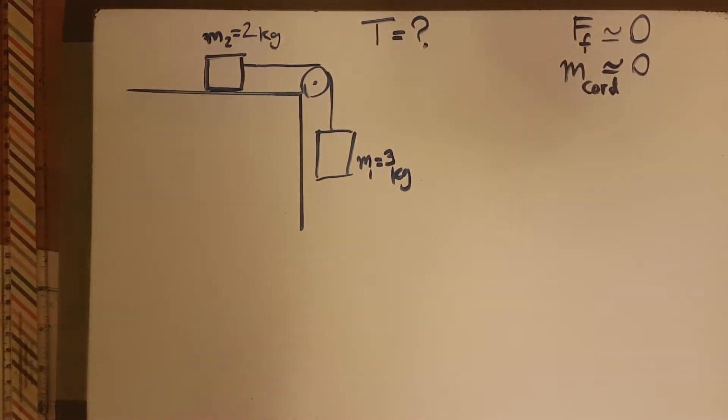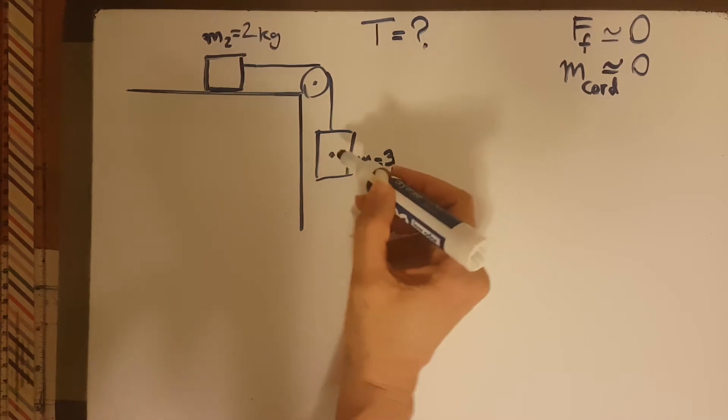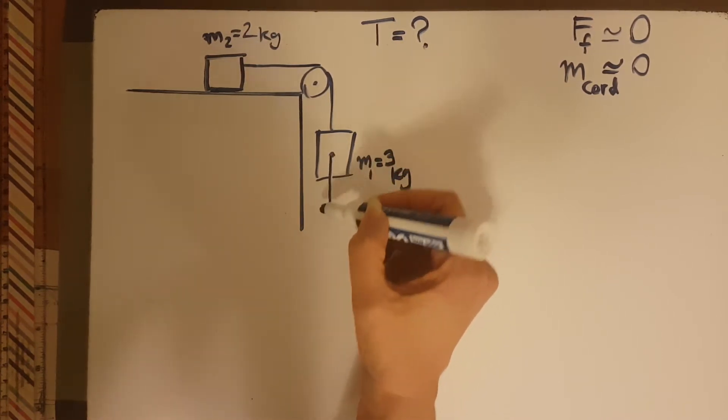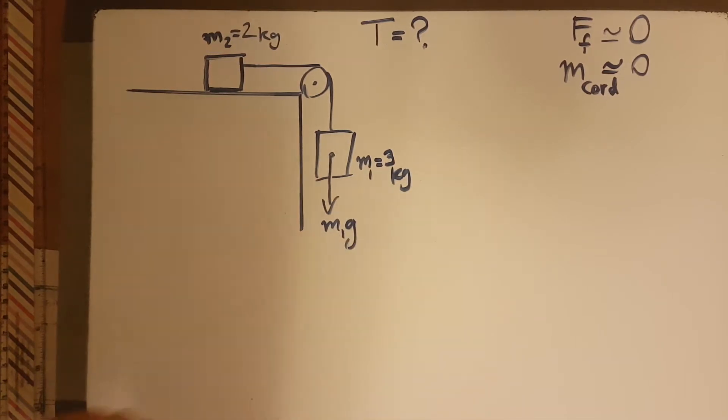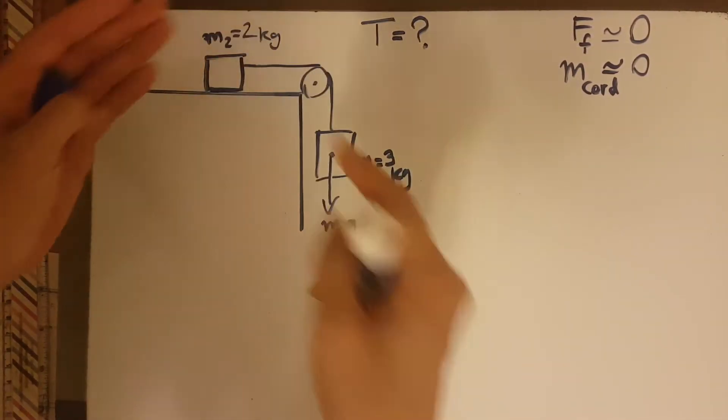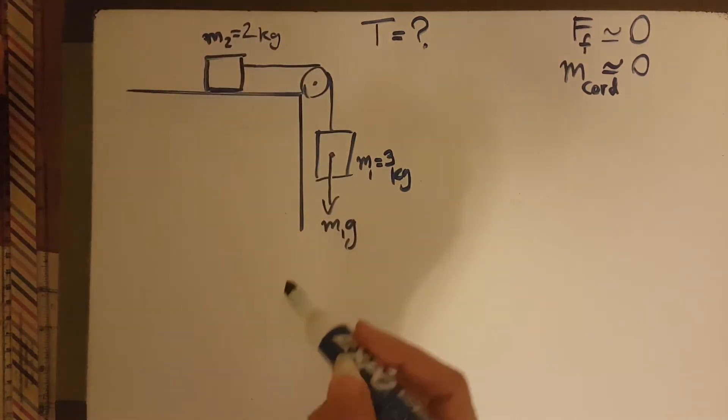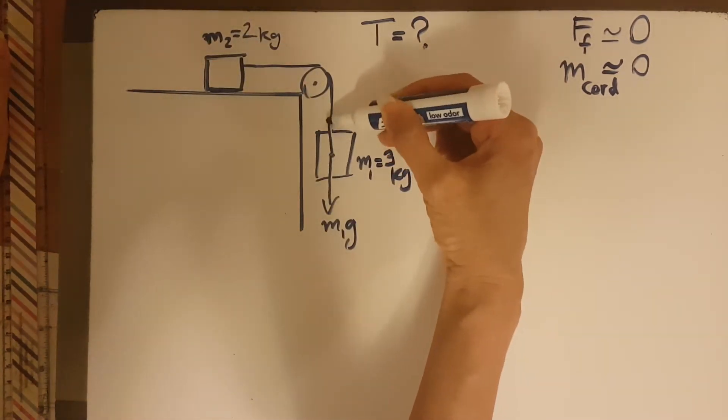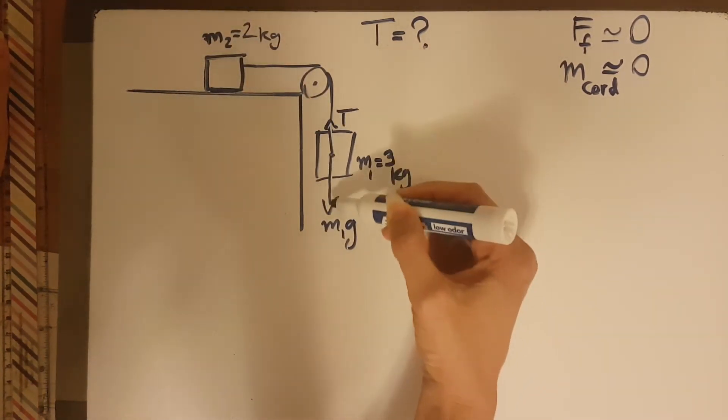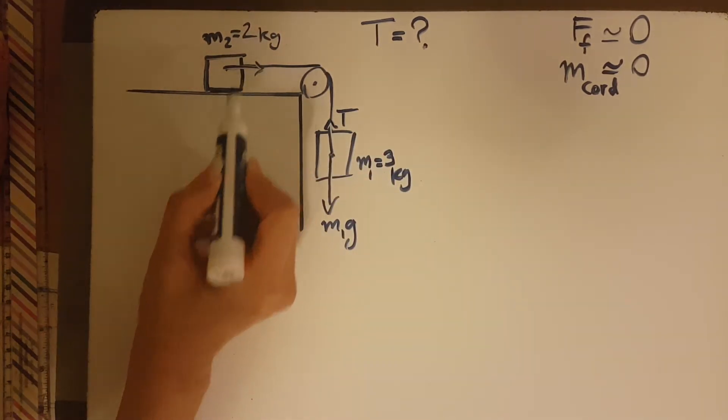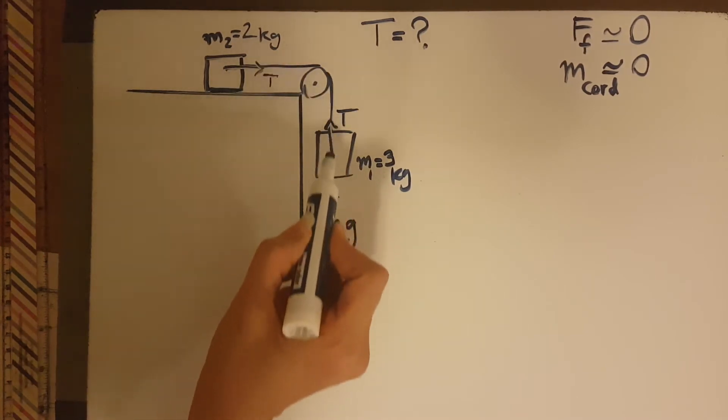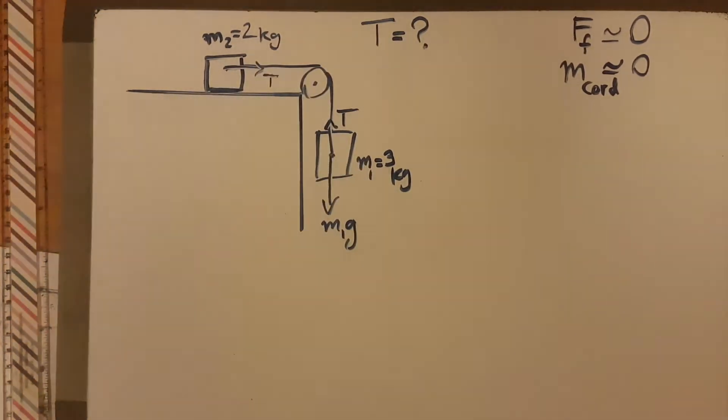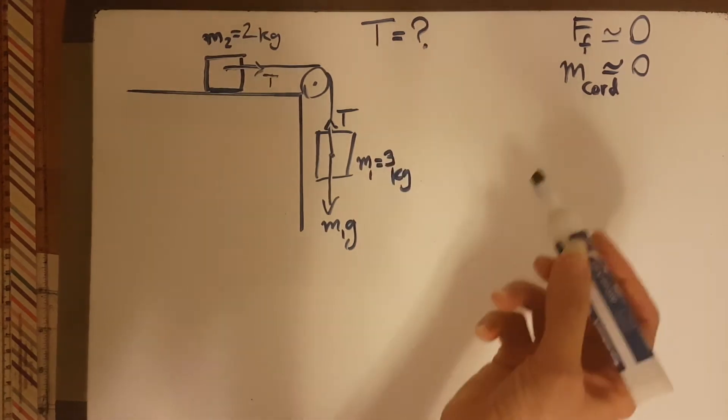In this case, let's draw the forces first. This is M1G which is dragging the whole thing down, actually causing the movement in the whole thing. This is the T and this T is equal to this T. The T in the entire cord is the same.